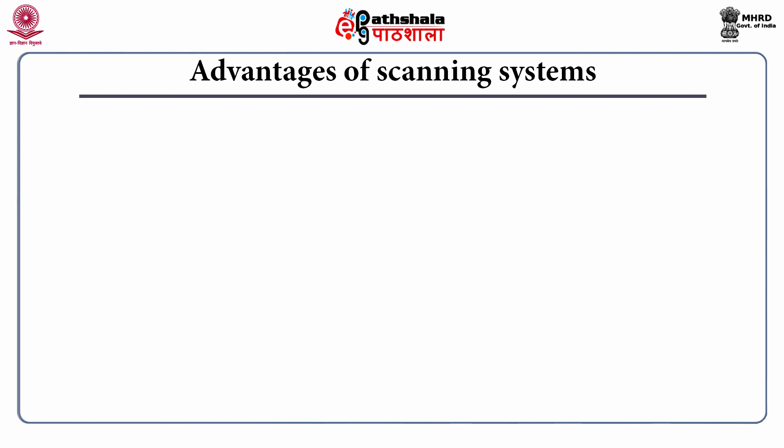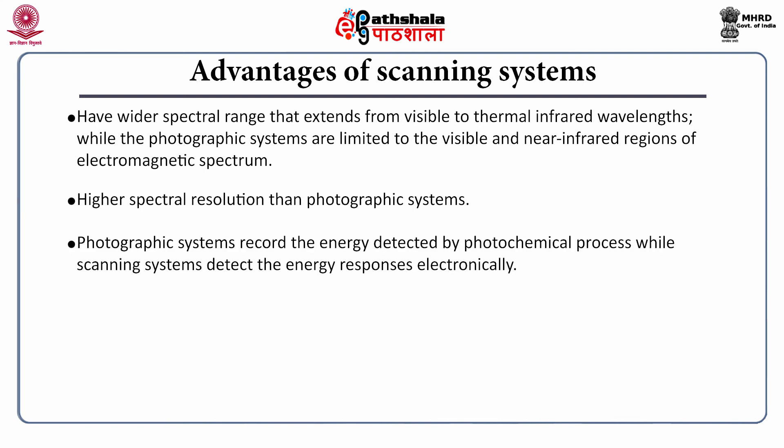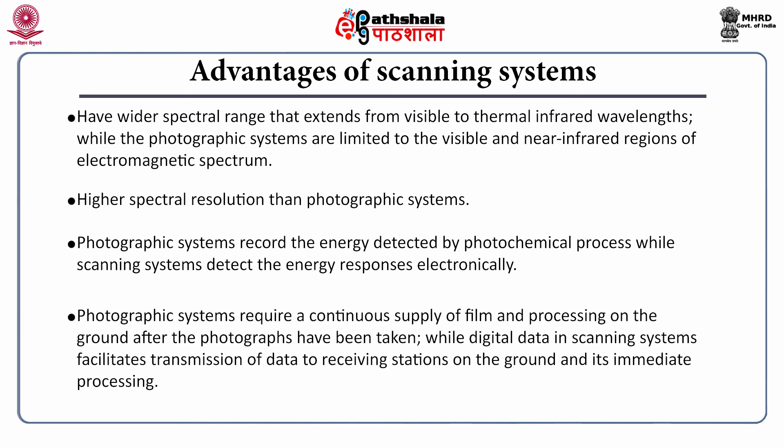Scanning systems have several advantages over conventional photography. Such scanning systems have a wider spectral range that extends from visible to thermal infrared wavelengths, while photographic systems are limited to the visible and near infrared regions. Scanning systems also offer higher spectral resolution compared to photographic systems. Photographic systems record energy detected by photochemical processes, while scanning systems detect energy responses electronically. Furthermore, photographic systems require a continuous supply of film and processing on the ground, while digital data in scanning systems facilitates transmission of data to receiving stations on the ground and its immediate processing.